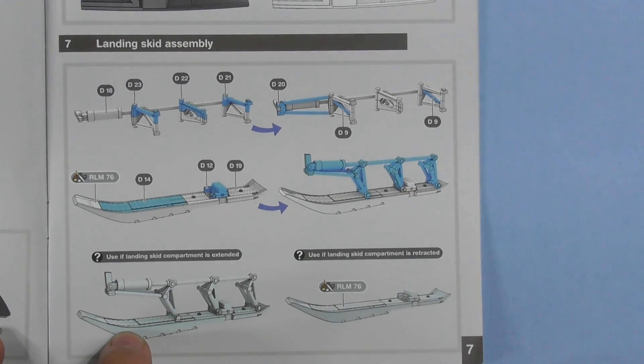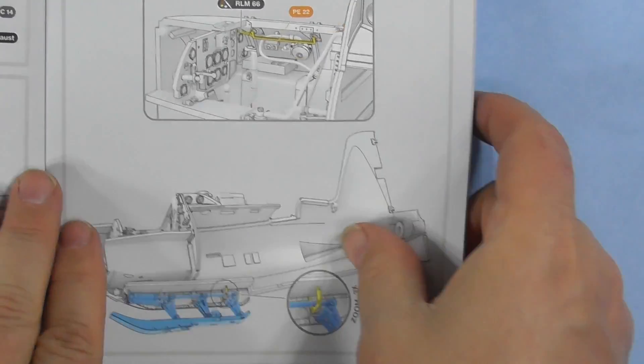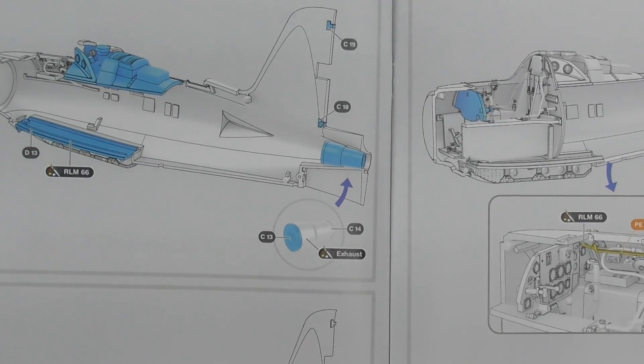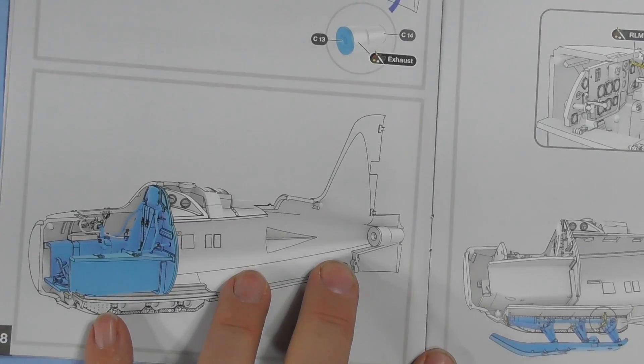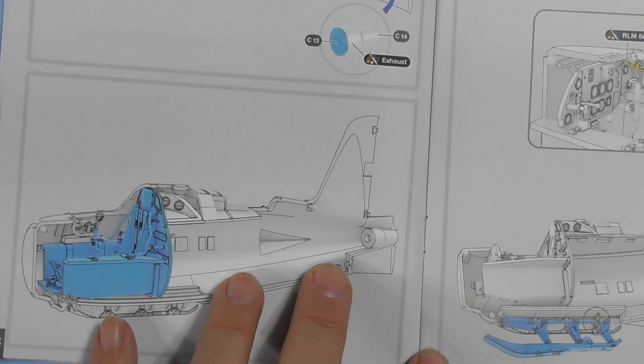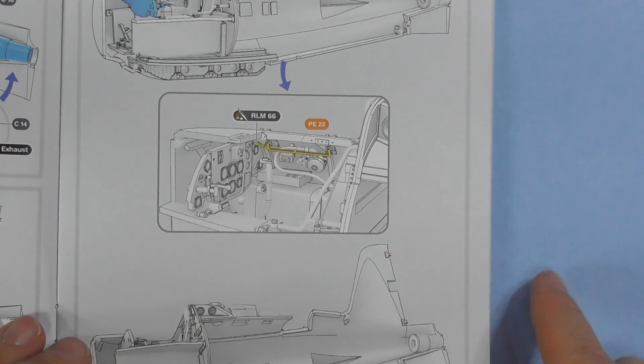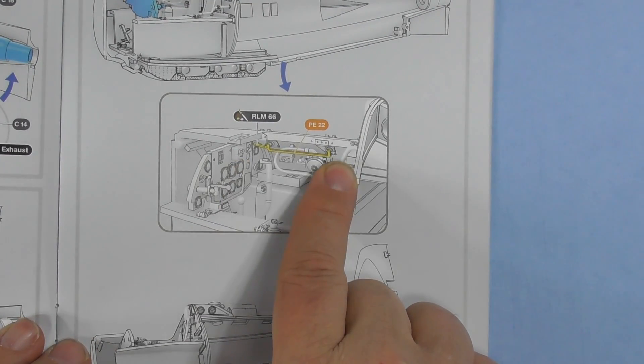There's your ski, and the control for your ski if you're using the landing skid extended. If you're not, it's retracted, so you decide if you're gonna have it extended or retracted. There you're putting all your parts in the interior. Your jet nozzle, there's your cockpit tub going inside.